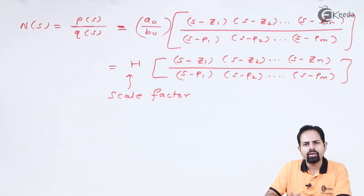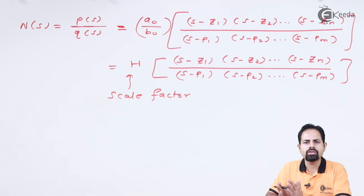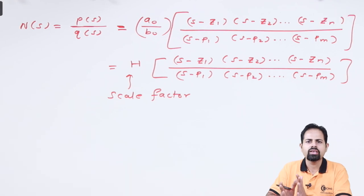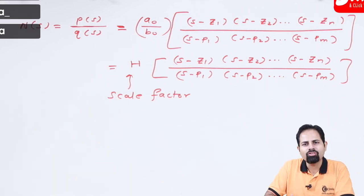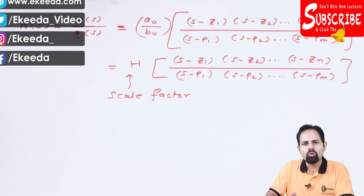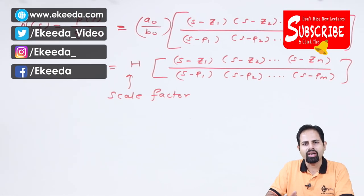So that is all about the introduction part of poles and zeros. So from this part poles and zeros, we will see some numericals which are on this poles and zeros, and then we will see certain conditions for impedance function as well as transfer function. So thanks guys for watching this video. Stay tuned to eKIDA and please subscribe to eKIDA. Thank you.